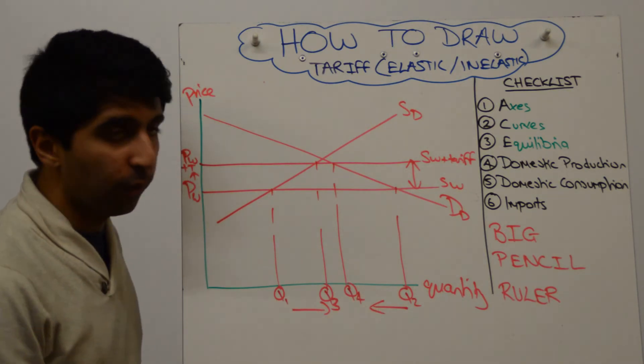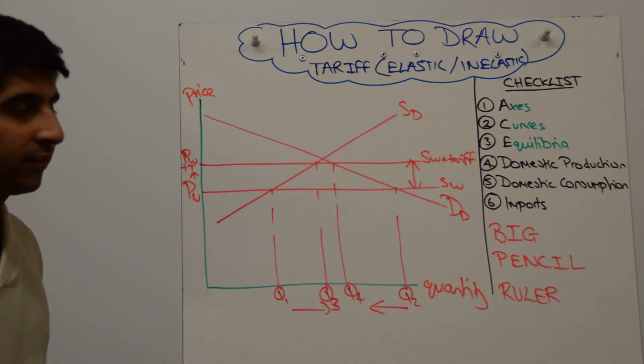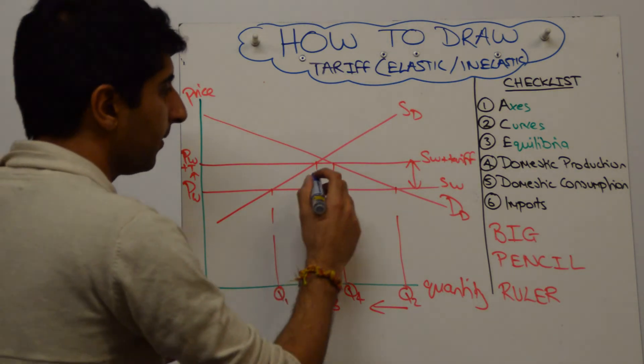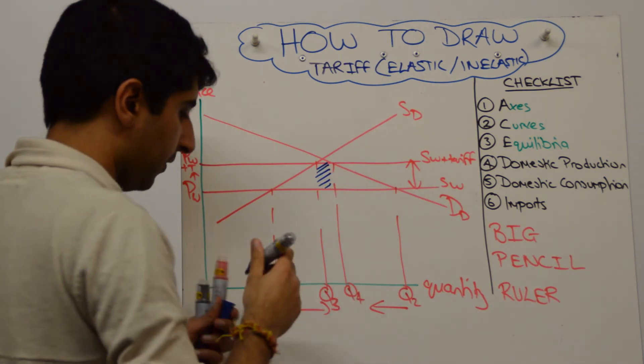There is a big, big fall in imports from Q1, Q2 to Q3, Q4. Substantial fall right there. And again, worth labeling and shading in the areas like we did before.